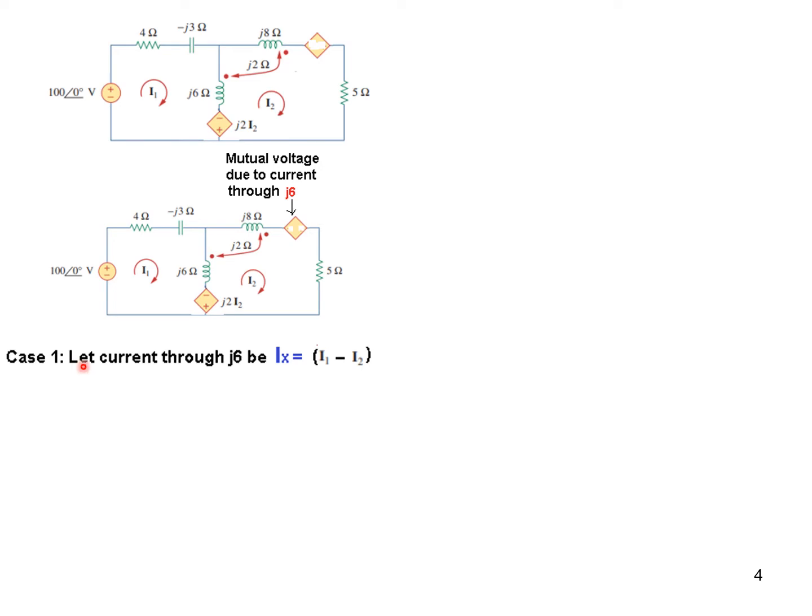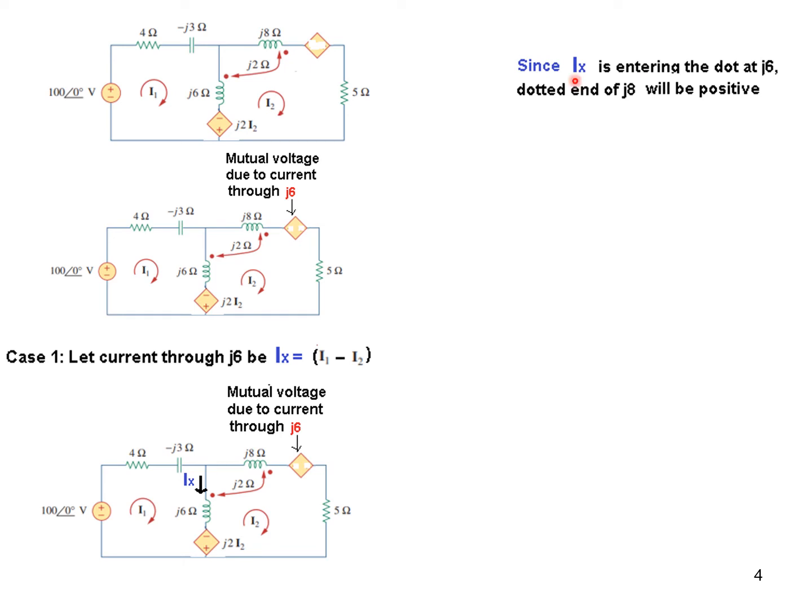Number one, let the current through J6 be Ix. So we are saying that Ix current is flowing through this, just like shown here. Ix is flowing. And since Ix is entering the dot at J6, now look, Ix is entering the dot at J6. Therefore, the dotted end of J8 will be positive. So the dotted end here will be positive. That means the right-hand side will be positive. So let's mark that. This will be positive.